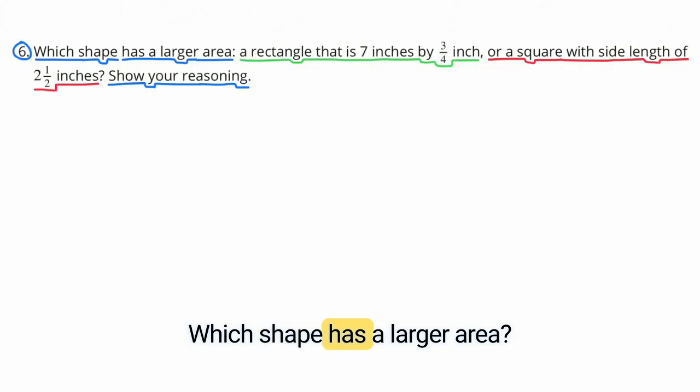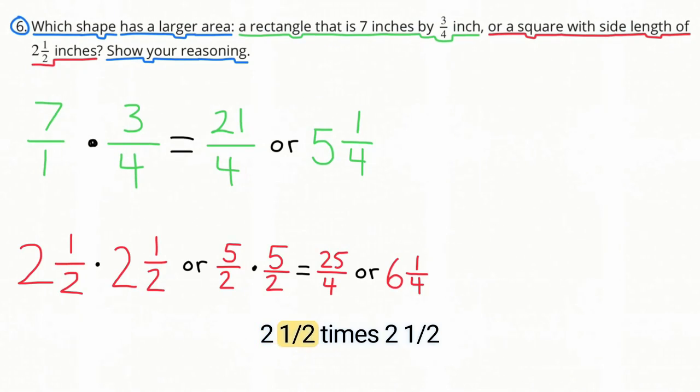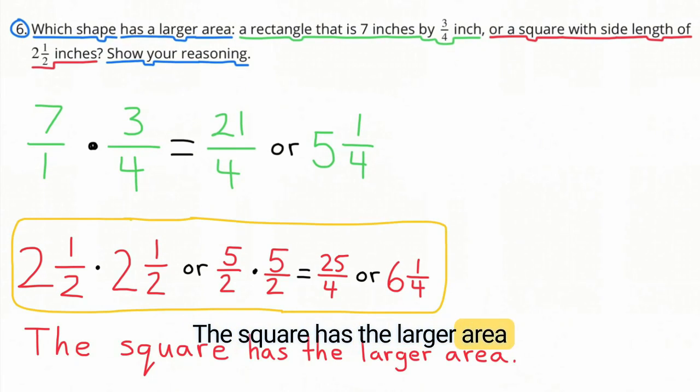Which shape has a larger area, a rectangle that is 7 inches by 3 fourths of an inch or a square with side length of 2 and a half inches? Show your reasoning. 7 inches can be represented as 7 over 1 and 7 over 1 times 3 fourths inches equals 21 fourths or 5 and 1 fourth inches. 2 and a half times 2 and a half is the same as 5 halves times 5 halves, which equals 25 fourths or 6 and 1 fourth. The square has the larger area because 6 and 1 fourth is greater than 5 and 1 fourths.